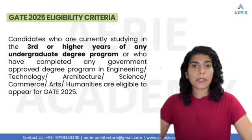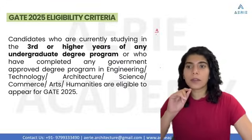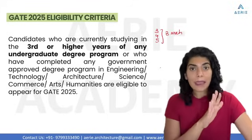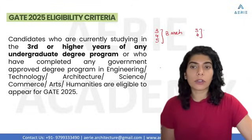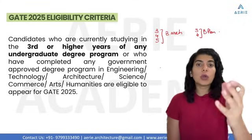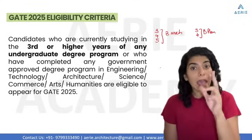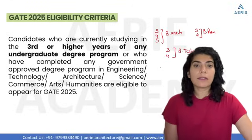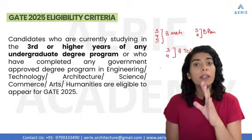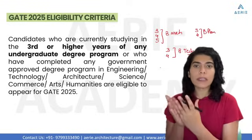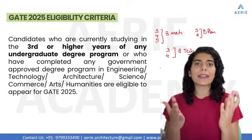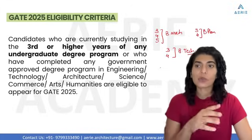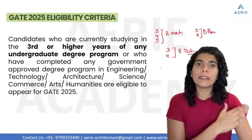Moving on to the eligibility criteria. If you are in third year, fourth year, or fifth year of your B.Arch degree, you are eligible. If you are in third or fourth year of your B.Plan degree, you are also eligible. And if you are in third or fourth year of B.Tech civil engineering, you are eligible as well. Or if you have already completed your B.Arch, B.Plan, or B.Tech, you are also eligible for GATE 2026. The GATE score is valid for three years.